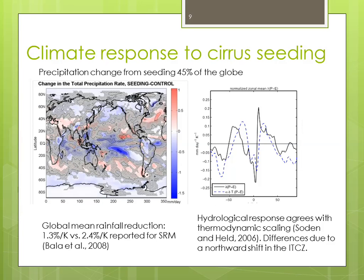Now to the precipitation changes from this type of geoengineering. The figure on the left shows changes in total precipitation rate in response to the seeding. Where there is hatching, there is no statistically significant change in precipitation. But where there is a statistically significant change, there's a pattern of wet gets drier and dry gets wetter — something that is a very good compensation for what we see in response to CO2 increase. Also in the global mean, there's a relatively modest reduction in rainfall of 1.3% per Kelvin of cooling, which is more modest than what you typically see for solar radiation management.